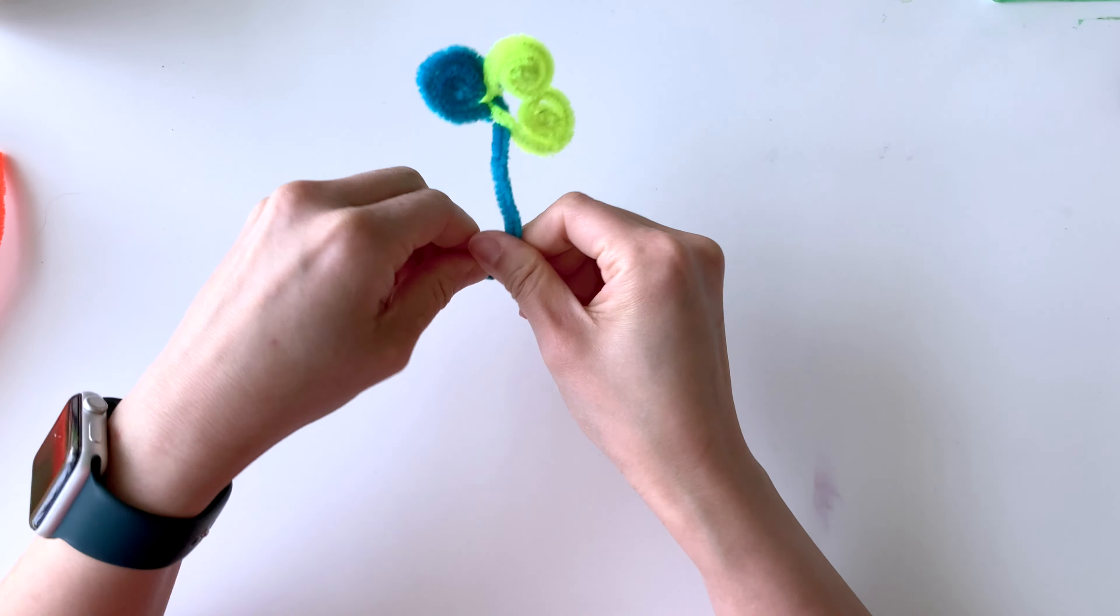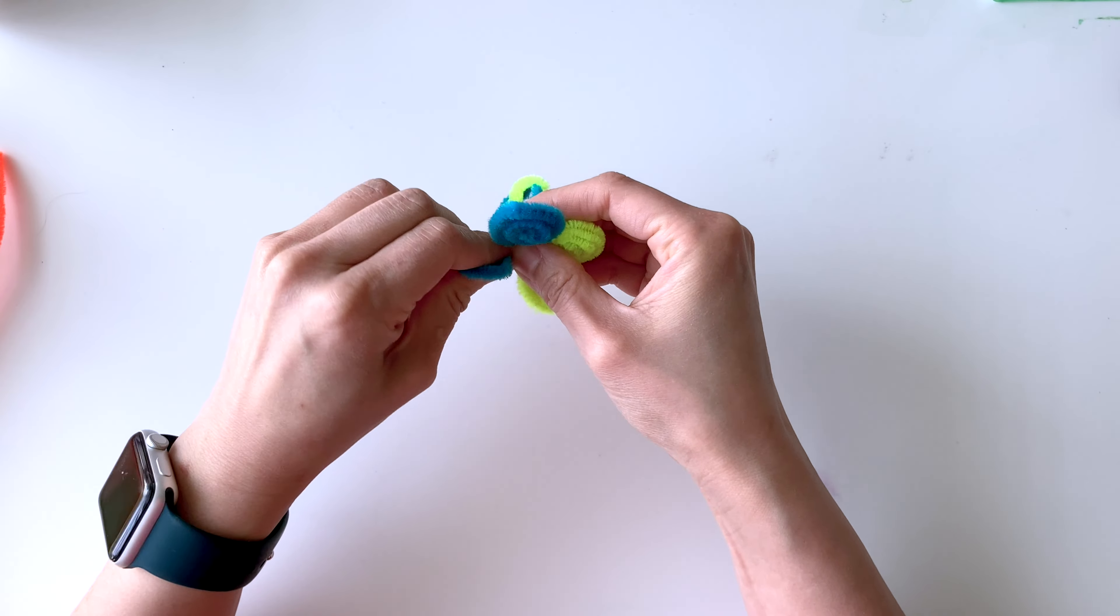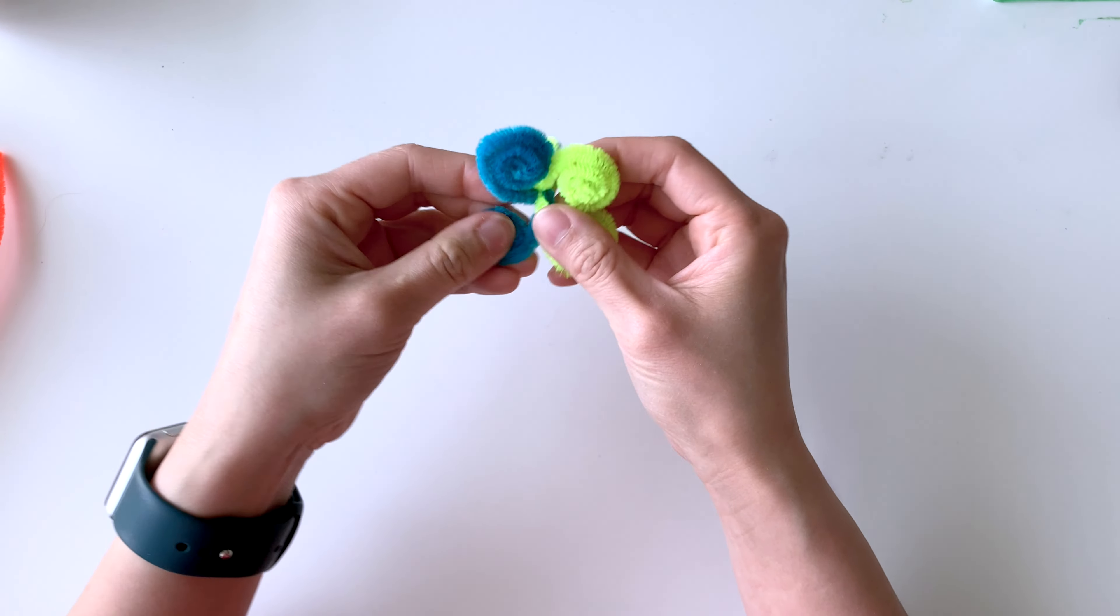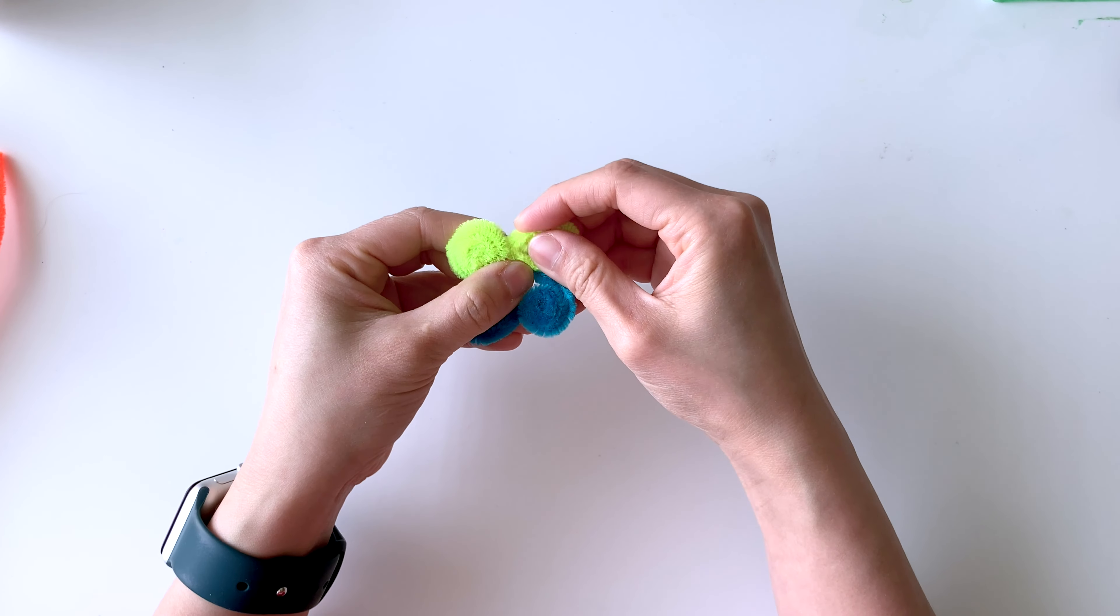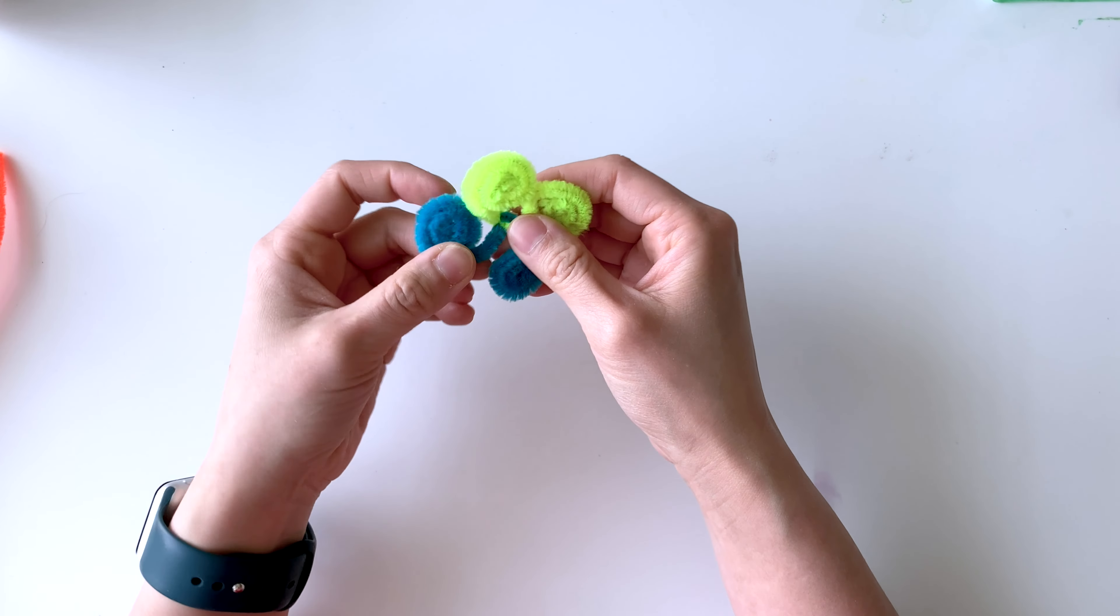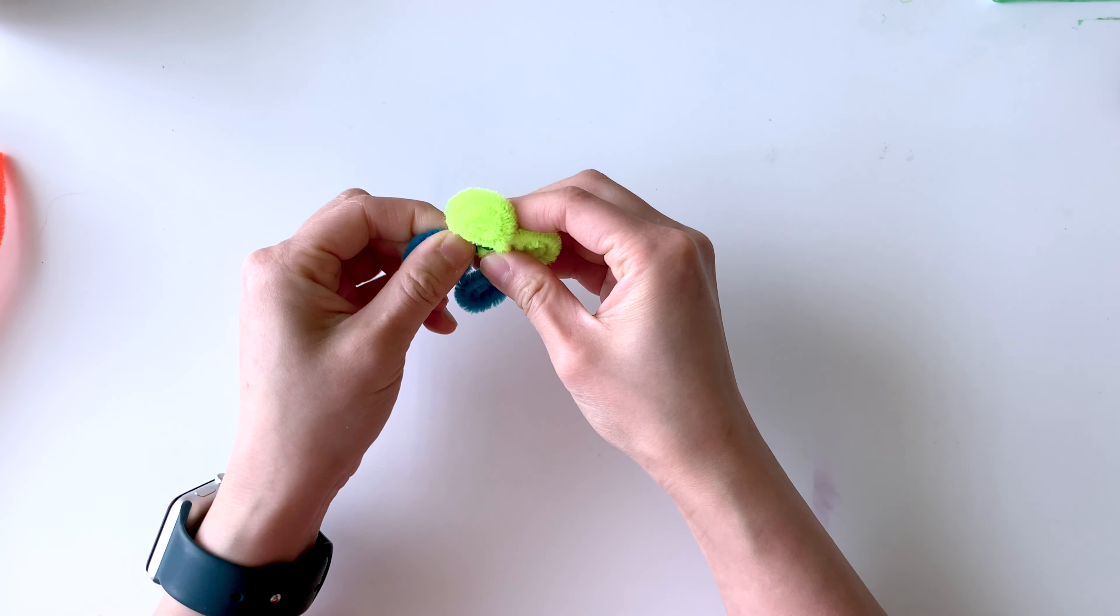And keep in mind, because these are pipe cleaners that have wire inside, it's really easy for you to manipulate the wing later on if you want to flap upwards or move it a little higher. It's very easy to do.